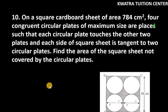Hello everyone, let's start with question number 10. It says: on a square cardboard sheet of area 784 cm², 4 congruent circular plates of maximum size are placed such that each circular plate touches the other two plates and each side of the square sheet is tangent to two circular plates. Find the area of the square sheet not covered by the circular plates.